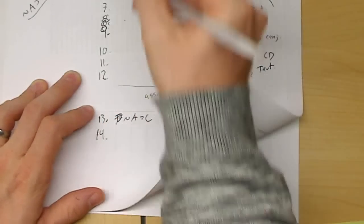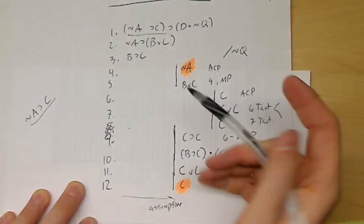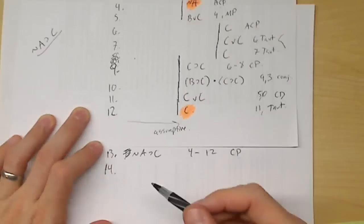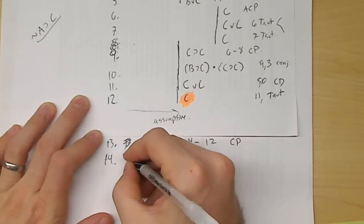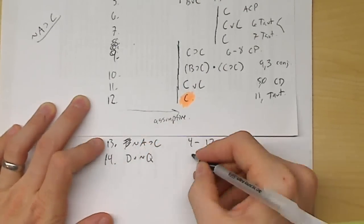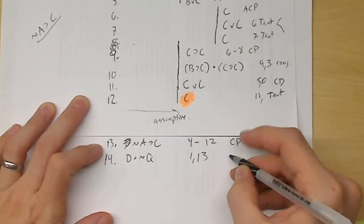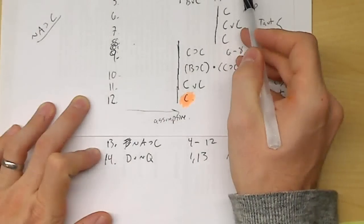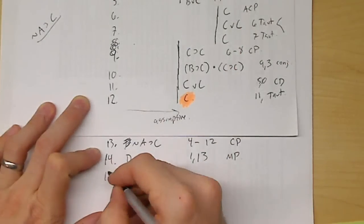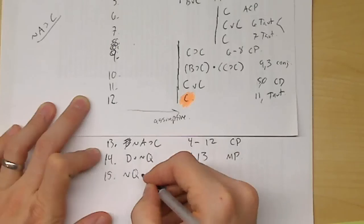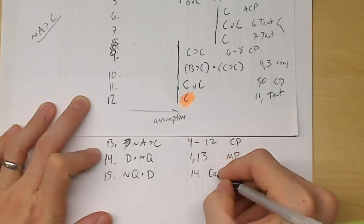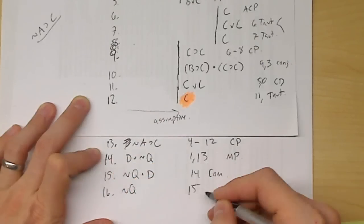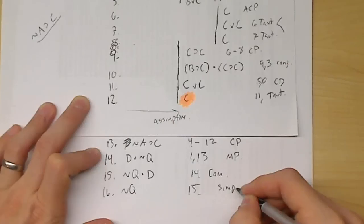Now that I have ¬A→C, I can use modus ponens with line one, because they match. So line 14 becomes D∧¬Q — that's lines one and thirteen, modus ponens. Now I just need to get ¬Q by itself. I need to commutate first. That's ¬Q∧D — line 14 commutation. Since I've commutated, line 16 — I can get ¬Q by itself by simplification.